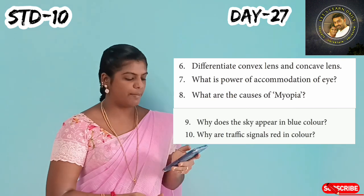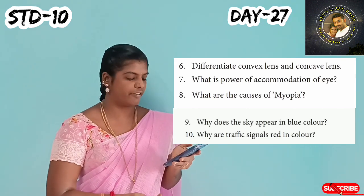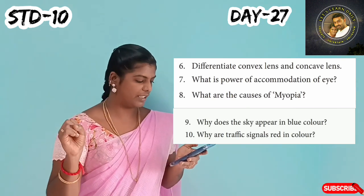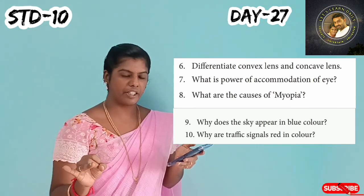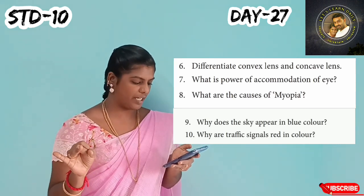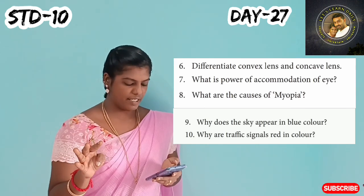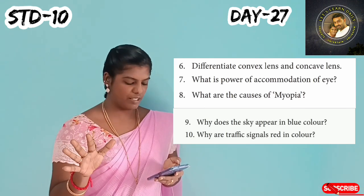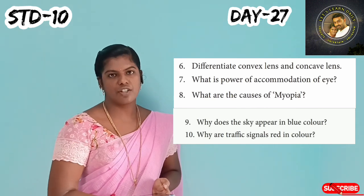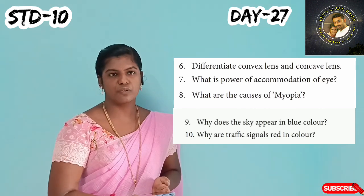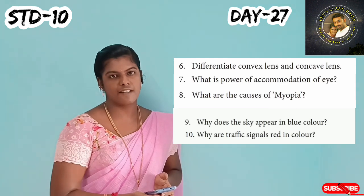Next, we will talk about the second lesson — first to five short answers. We will differentiate convex and concave lenses. What is the power of accommodation of the eye? What are the causes of myopia? Why does the sky appear blue in color? Why are traffic signals red in color? We will cover all these short answers.